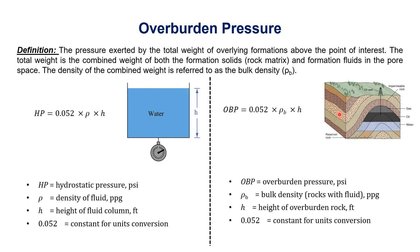Bulk density is the density of the overlying rock material. For example, here is the reservoir, and above this reservoir we have four layers: 1, 2, 3, and 4. Inside this rock matrix there is fluid, so the total density — that is the solid material plus the fluid inside it — is called bulk density. The combined density of both the solid part and the fluid is called bulk density. So if we want to calculate the overburden pressure, we take the density of each rock layer, multiply by 0.052, multiply by the height of the rocks, and then add them all together to get the overburden pressure.